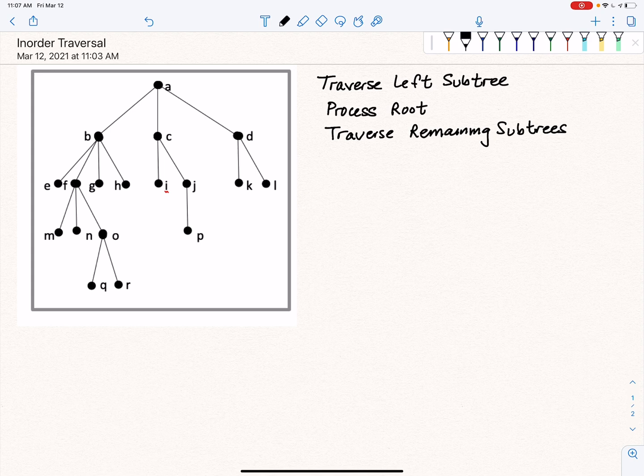So given that we're at a root, we traverse the left subtree first, then we process the root, then we traverse the right, the remaining subtrees. It could be just the right, but when there's more than one, we have to look at the remaining.